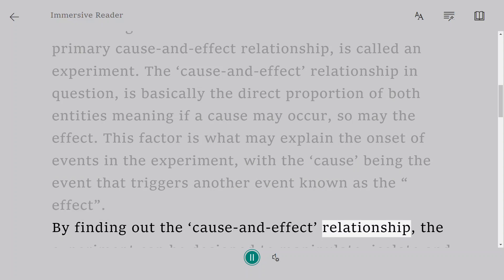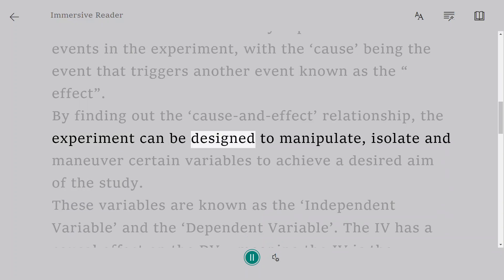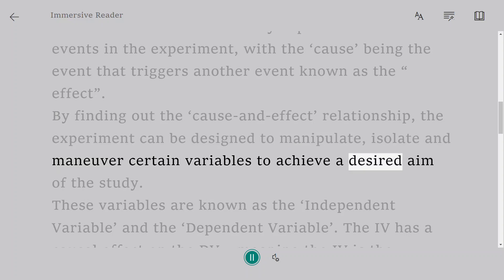By finding out the cause-and-effect relationship, the experiment can be designed to manipulate, isolate, and maneuver certain variables to achieve a desired aim of the study.